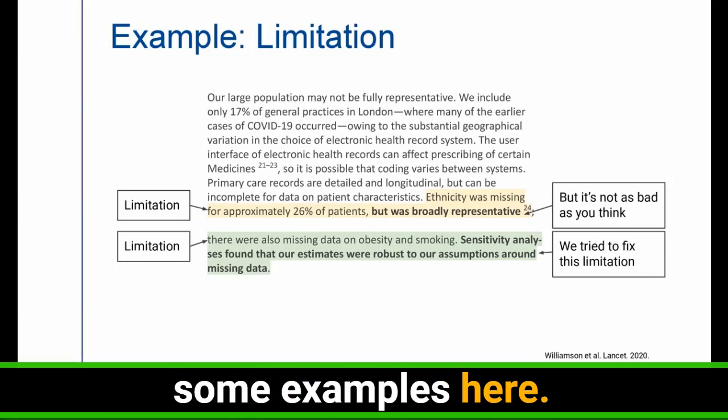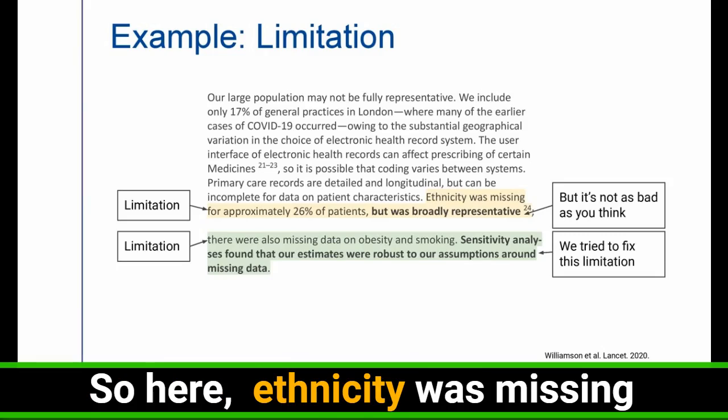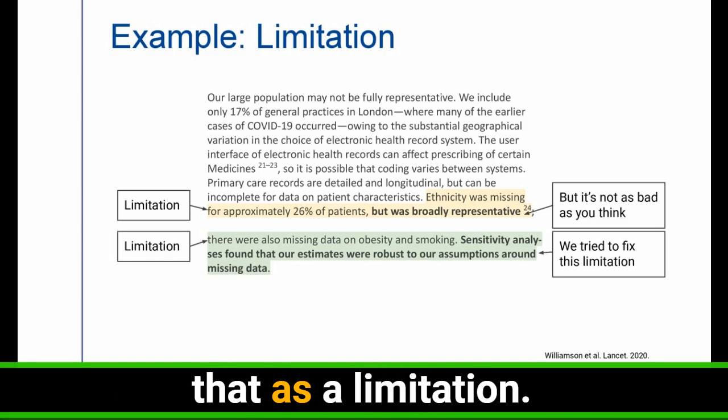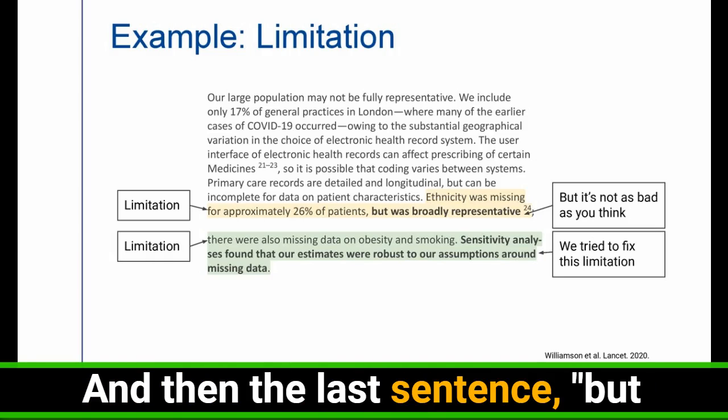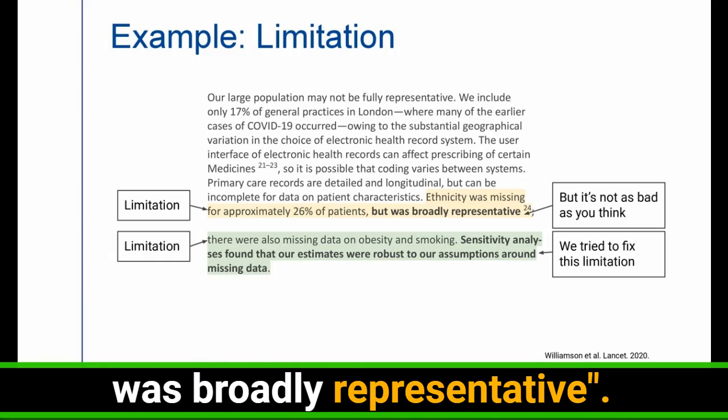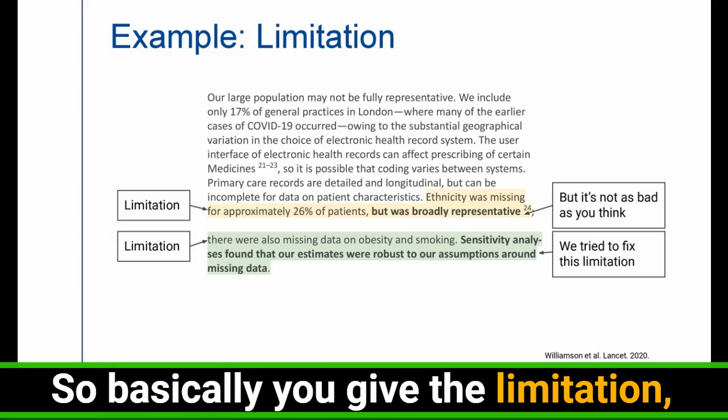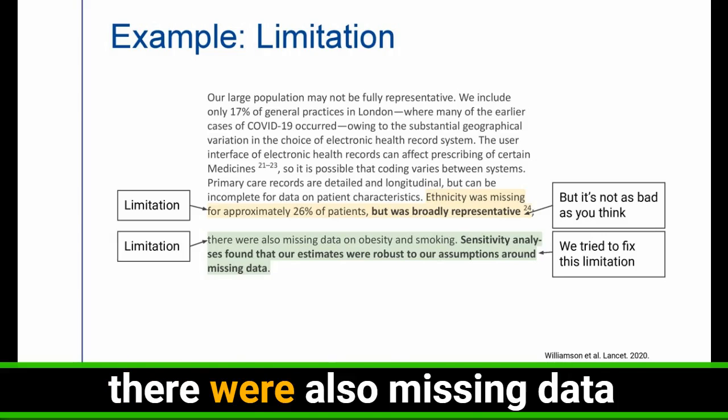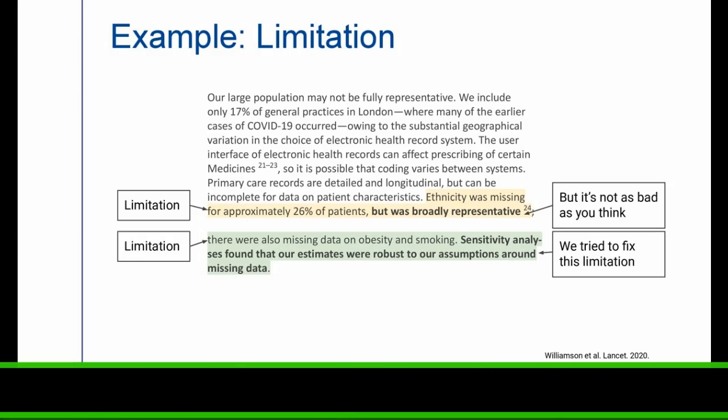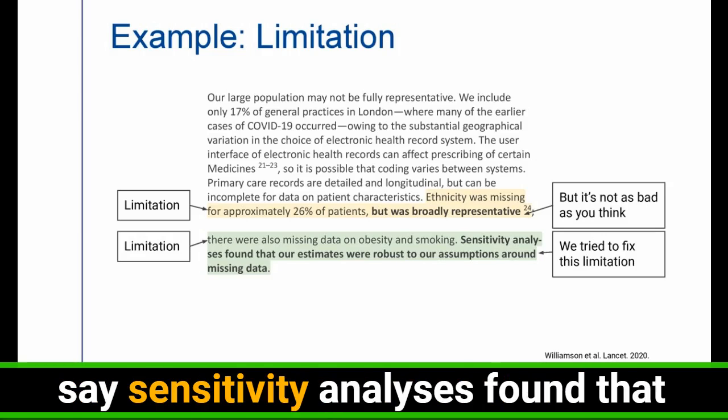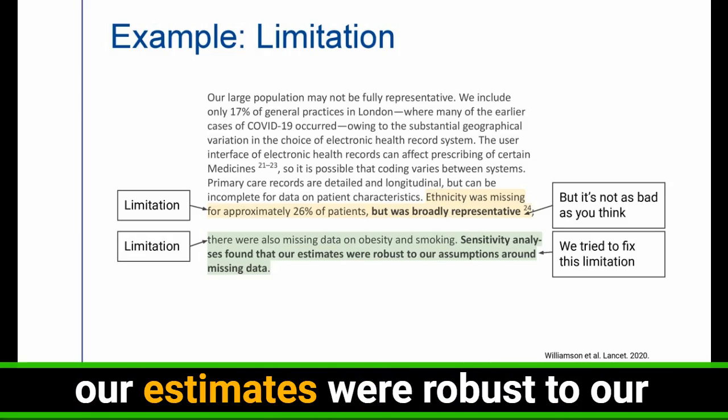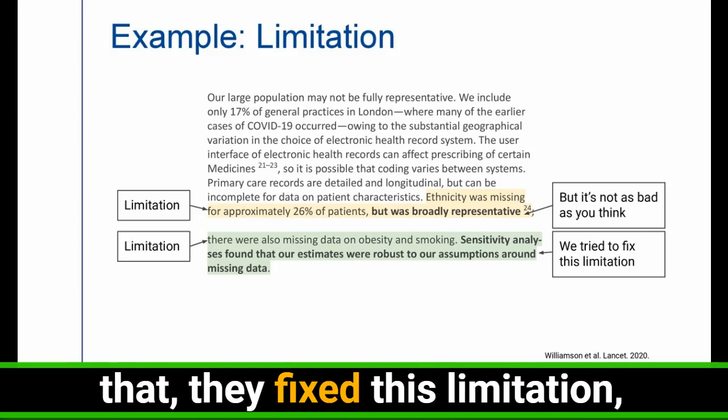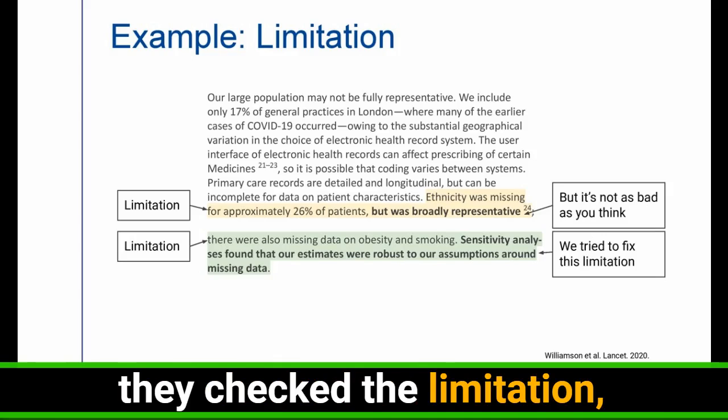So I'm going to give you some examples here. So here, ethnicity was missing for approximately 26% of patients. So they are seeing that as a limitation. And then the last sentence, but, was broadly representative. So basically, you give the limitation, but it's not as bad as you think. The next sentence here, there were also missing data on obesity and smoking. And in the next, immediately they say, sensitivity analyses found that our estimates were robust to our assumptions around missing data. So they basically tried to say that they fixed this limitation and checked the limitation, and it was actually fine.